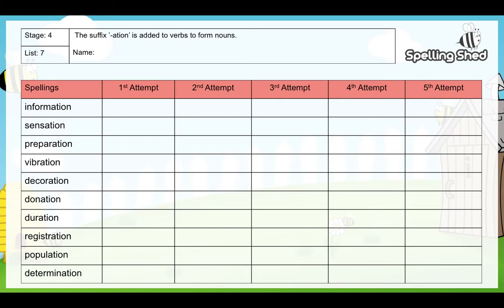Brilliant! If you got it right, have another go. If you didn't get it right, just check where you've gone wrong and then have another go. Try and write it out five times so it really gets into your movement memory so that you really know the spelling very well. Do that for each of your spelling words.